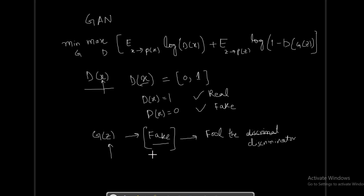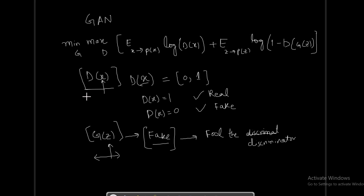The discriminator will catch the fake image, but the training process will keep continuing until the generator generates an image that does not look fake but looks like a real one. At that stage the generator will have successfully fooled the discriminator. This is why we call it an adversarial network — because there is a battle between the discriminator function and the generator function. The generator tries to output samples that look like real ones, and the discriminator tries to classify the outputs of the generator as fake.